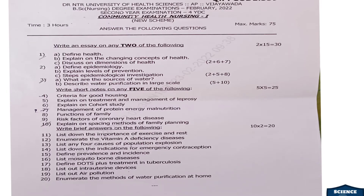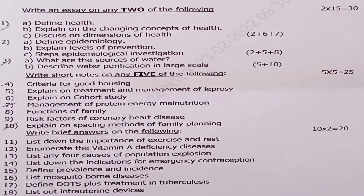The next question paper code is 339, Community Health Nursing 1, also from February 2022. It also has essay, short note, and brief answer sections. Question 1a: define health — 2 marks. Question 1b: explain the changing concepts of health — 6 marks. Question 1c: discuss the dimensions of health — 7 marks. Question 2a: define epidemiology — 2 marks. Question 2b: explain levels of prevention — 5 marks. Question 2c: steps of epidemiology — 8 marks.